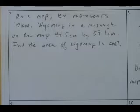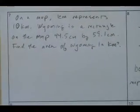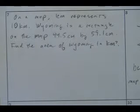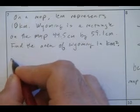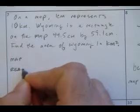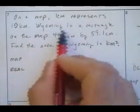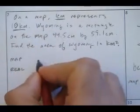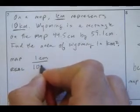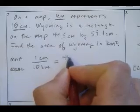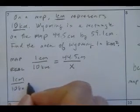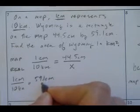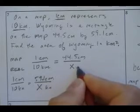Okay. Map problems. On a map, one centimeter represents 10 kilometers. Wyoming is a rectangle on the map that's 44.5 centimeters by 59.1 centimeters. Find the area of Wyoming in kilometers squared. Okay. So let's see. 44 by 59. Well, I know that... Map to real will be the same. They gave me the ratio. On a map, one centimeters is 10 kilometers. So, Map, one centimeter is 10 kilometers. So, this has 44.5 centimeters. How many kilometers is that going to be? And we also can set up one centimeter to 10 kilometers. 59.1 centimeters equals how many kilometers? We're trying to figure it out. Cool.